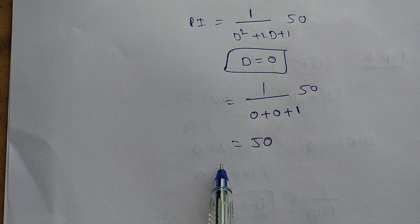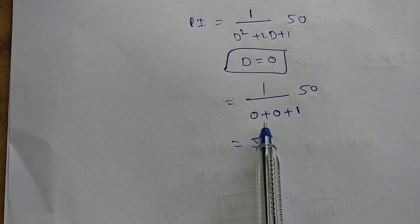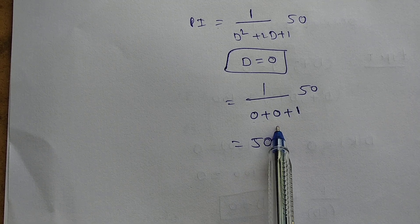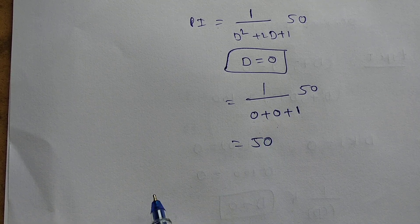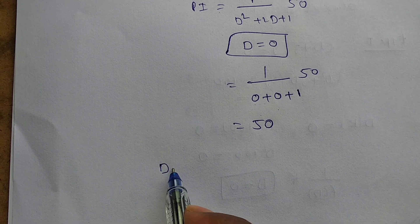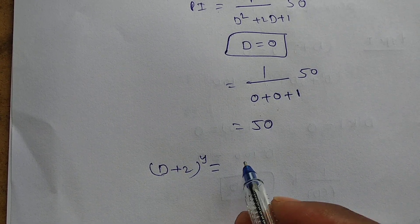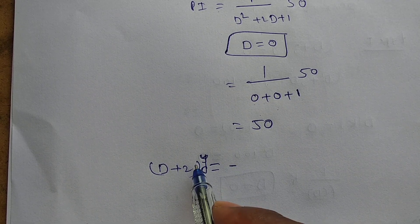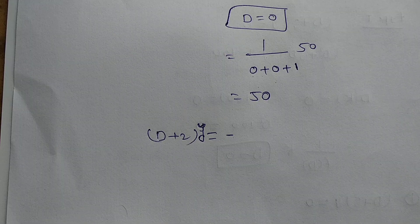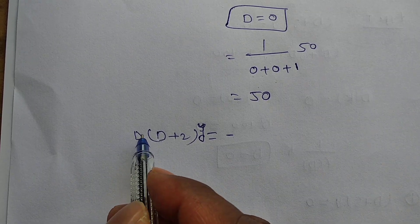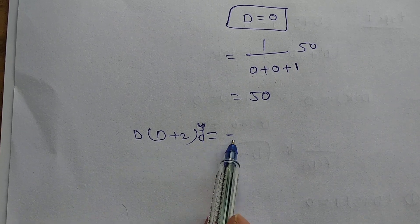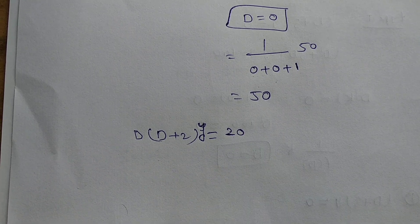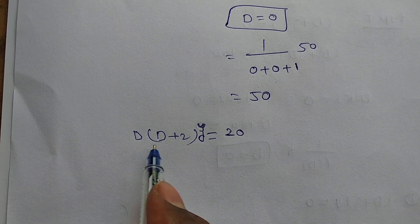By observation in the previous problems, the denominator gives a non-zero constant. But sometimes you may get 0 in the denominator. For example, consider D(D+2)·y = 20, which expands to (D²+2D)·y = 20. In this case, substituting D = 0 gives 1/(0+0) · 20 = 1/0, which is undefined.